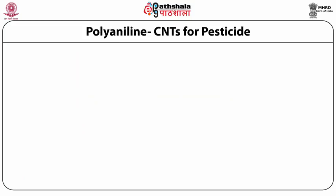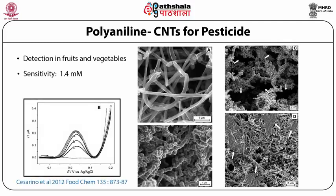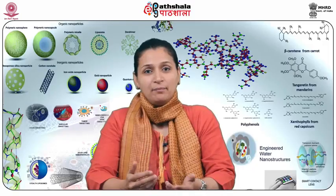This is an example of pesticide detection using carbon nanotubes with polyaniline as an immobilization matrix. In this work, pesticides were detected in fruits and vegetables with a sensitivity of detection as low as 1.4 micromolars and a short detection time of only 10 minutes. This work shows the detection of the pathogen Salmonella using gold nanoparticles as well as magnetic nanoparticles, with a response time as short as 1.3 hours versus conventional techniques which could take 24 to 36 hours.